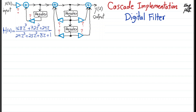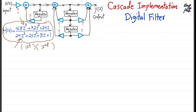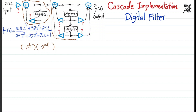Cascade implementation of a digital filter is shown in this example. We have a given desired transfer function H(z) in the z-domain. It has a third-order polynomial in the numerator and a third-order polynomial in the denominator, so we expect to break it down into a first-order polynomial and a second-order polynomial, realizing the filter as a cascade of a first-order stage followed by a second-order stage.